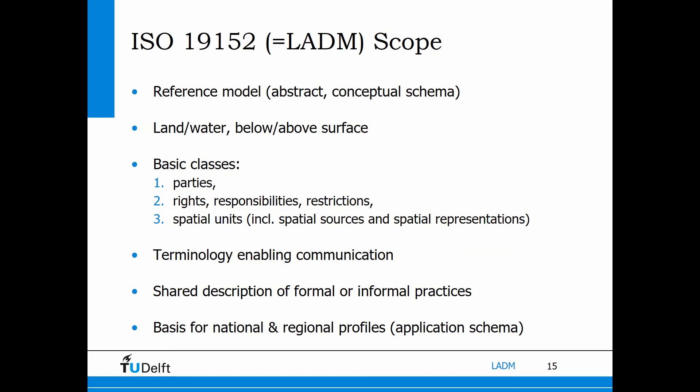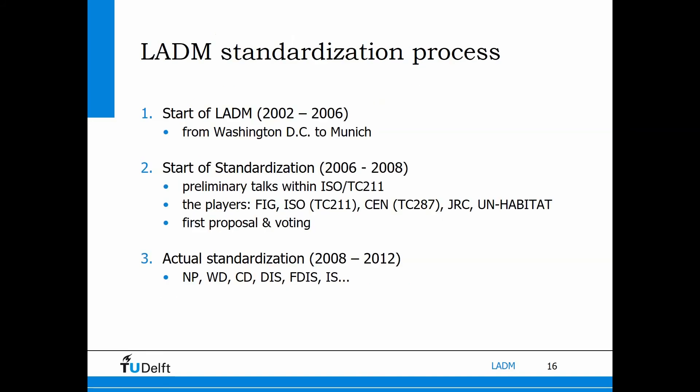The three packages are: the party package with persons; the legal package with rights, restrictions, and responsibilities; and the spatial package, where spatial sources such as surveys are included, as well as representations such as the cadastral maps. It defines the terminology, which allows communication between involved organizations and systems, and it helps countries to start — and on top of this they can build their national or regional profile, the application schema.